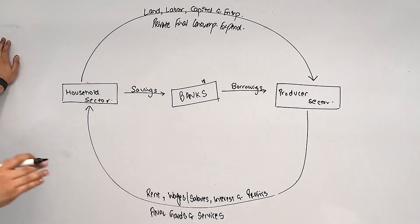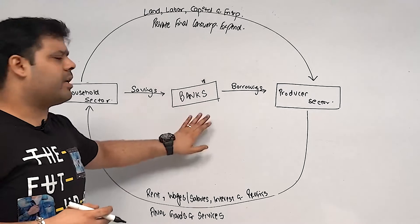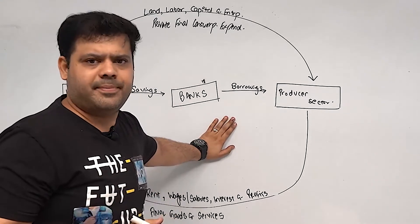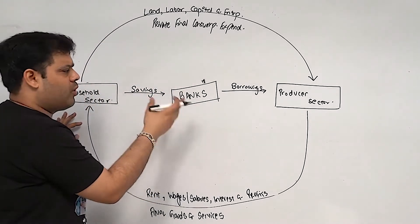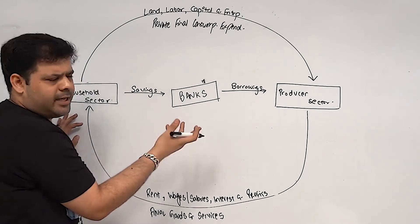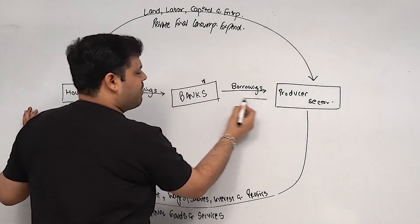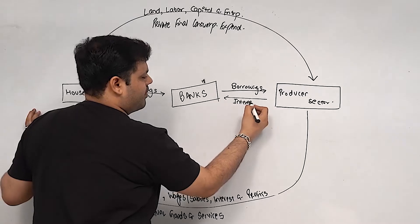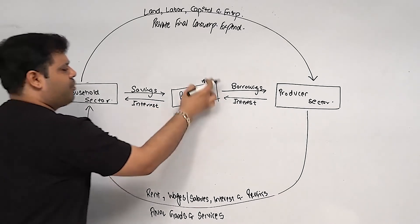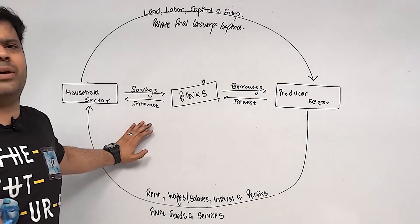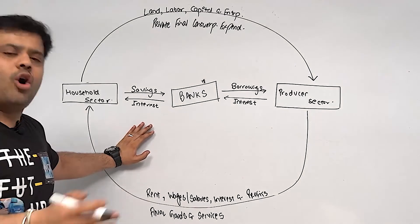Banks are not a new sector — banks are part of the producer sector. But we give them special importance. Banks take in deposits — say 10 lakhs — keep some as CRR, SLR reserves (say 20%, which is 2 lakhs), and give out the remaining 8 lakhs as loans at 12% interest. They give depositors 4% to 6% interest. The other profits go to land, wages, salary, interest and profit.